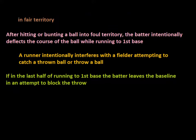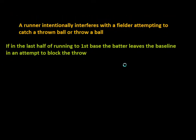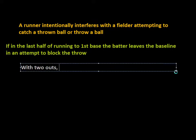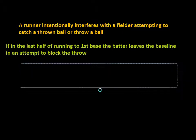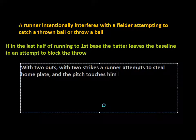The final way is a pretty rare situation that gets a little more in depth. This takes place with two outs and two strikes. A runner on third base attempts to steal home during a legal pitch, and the ball actually touches the runner while it is in the strike zone.